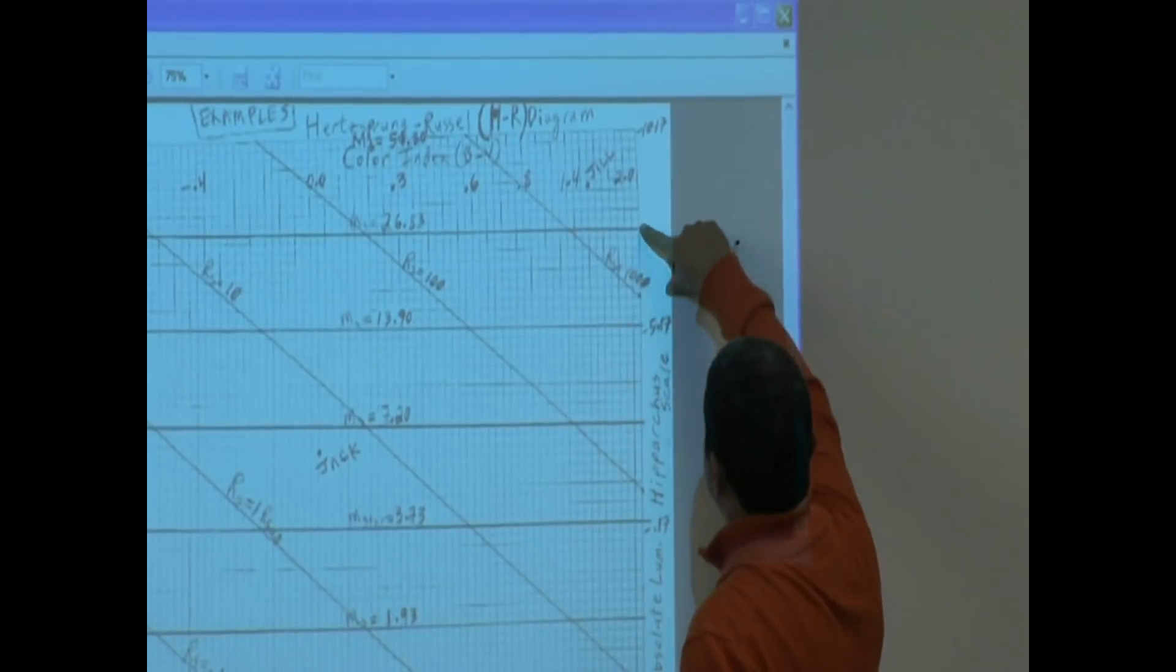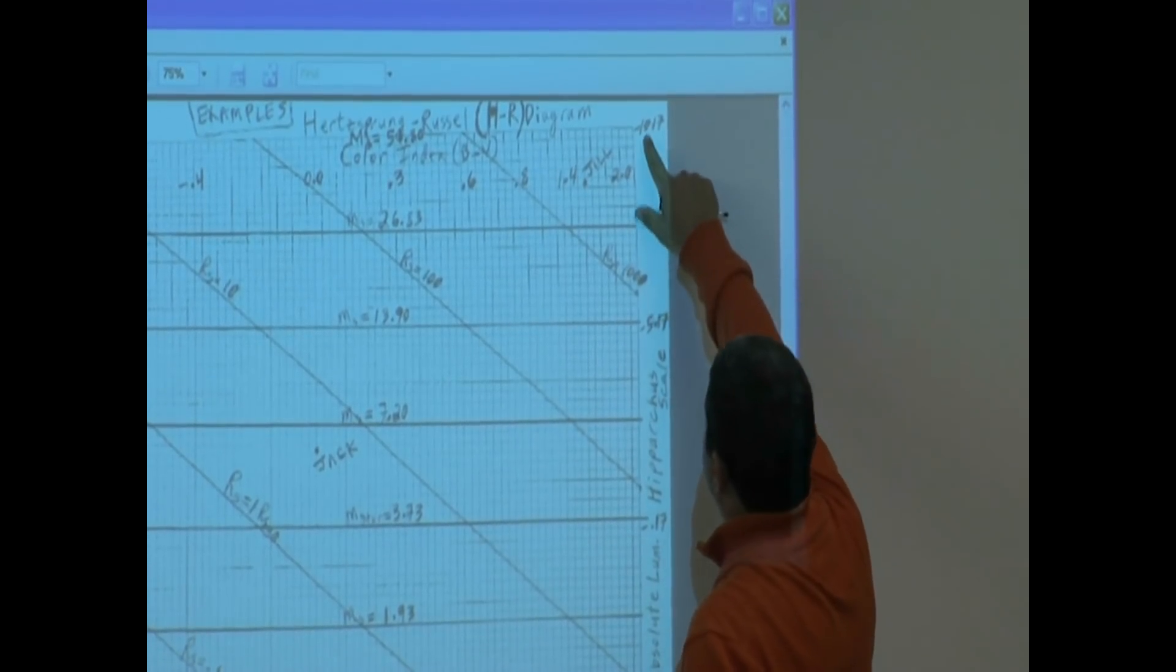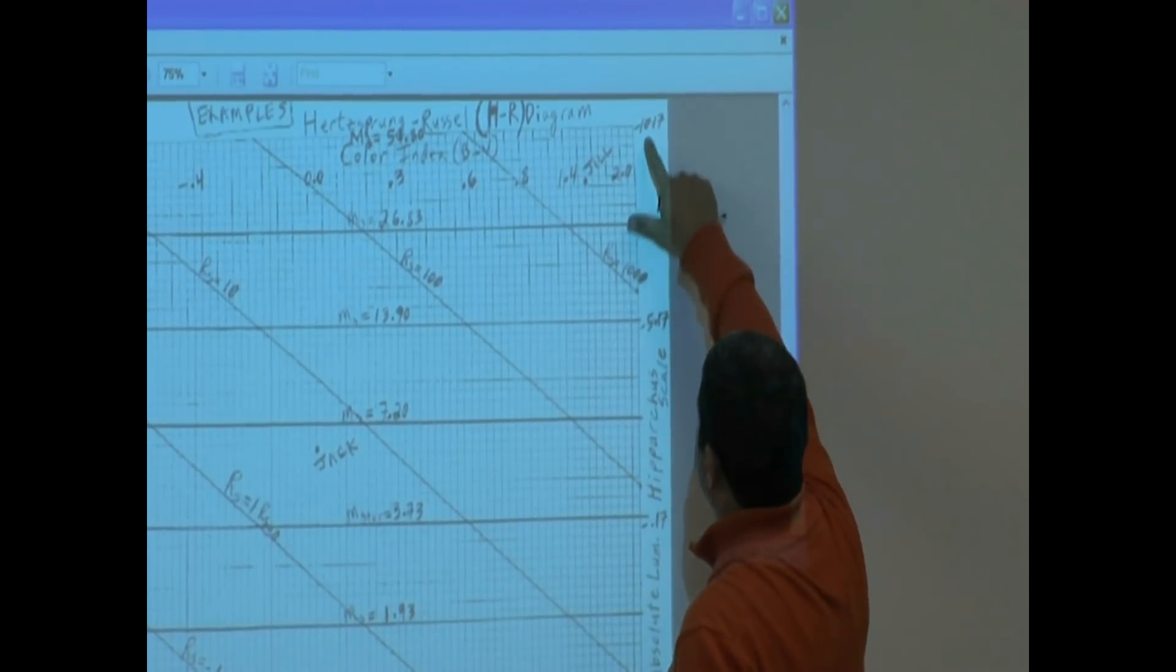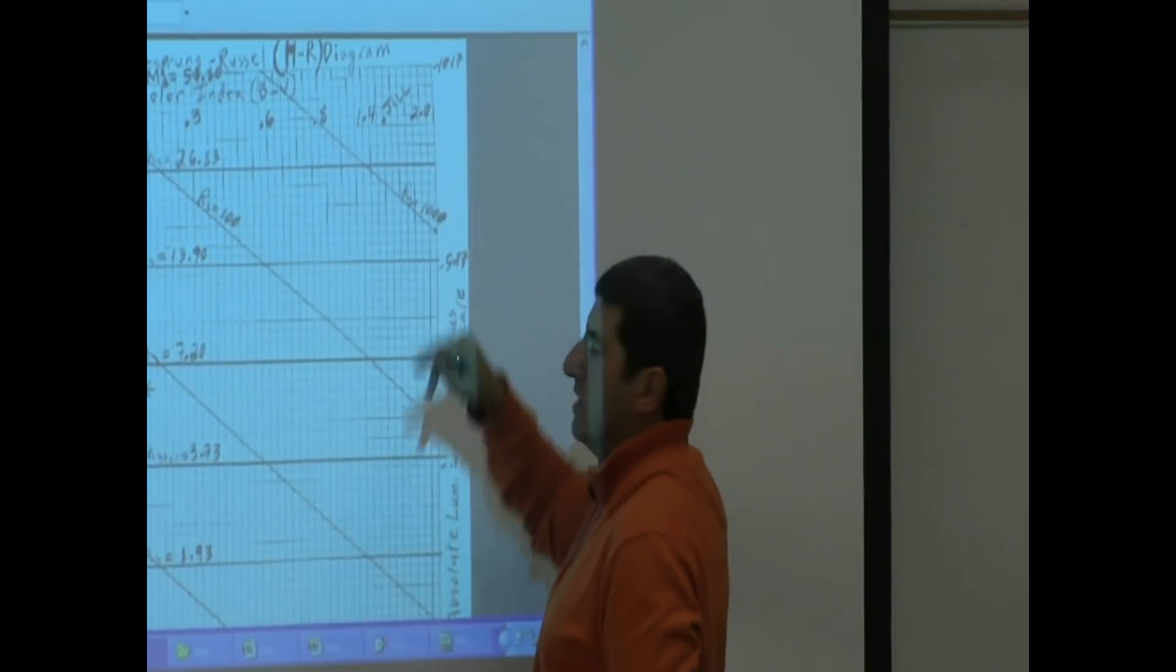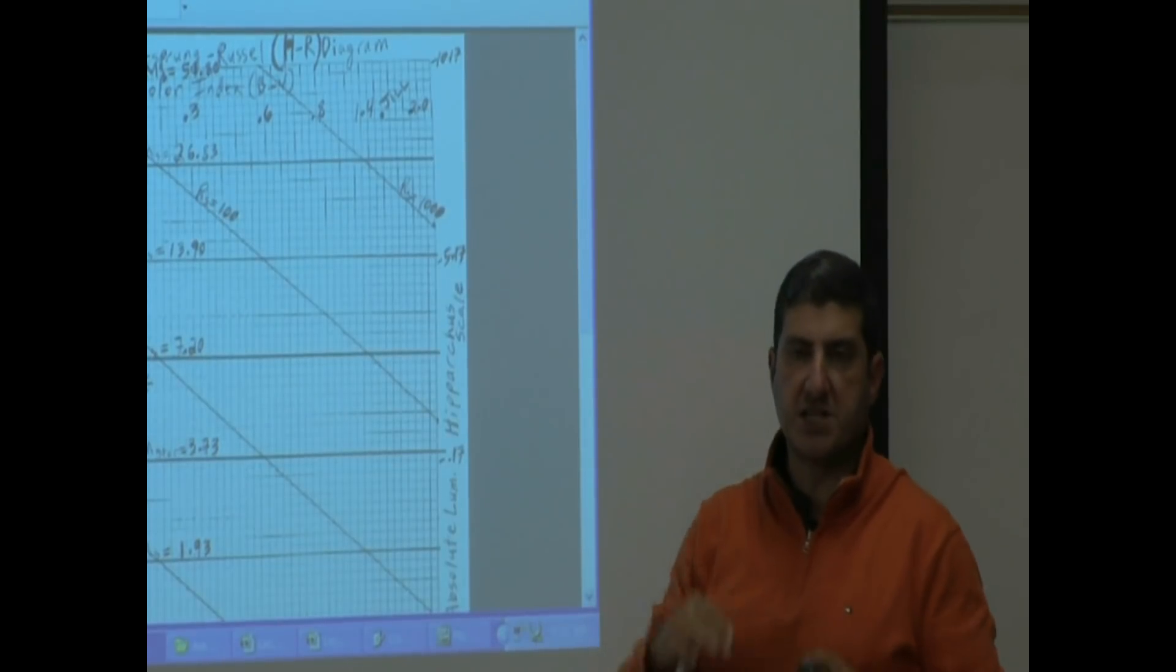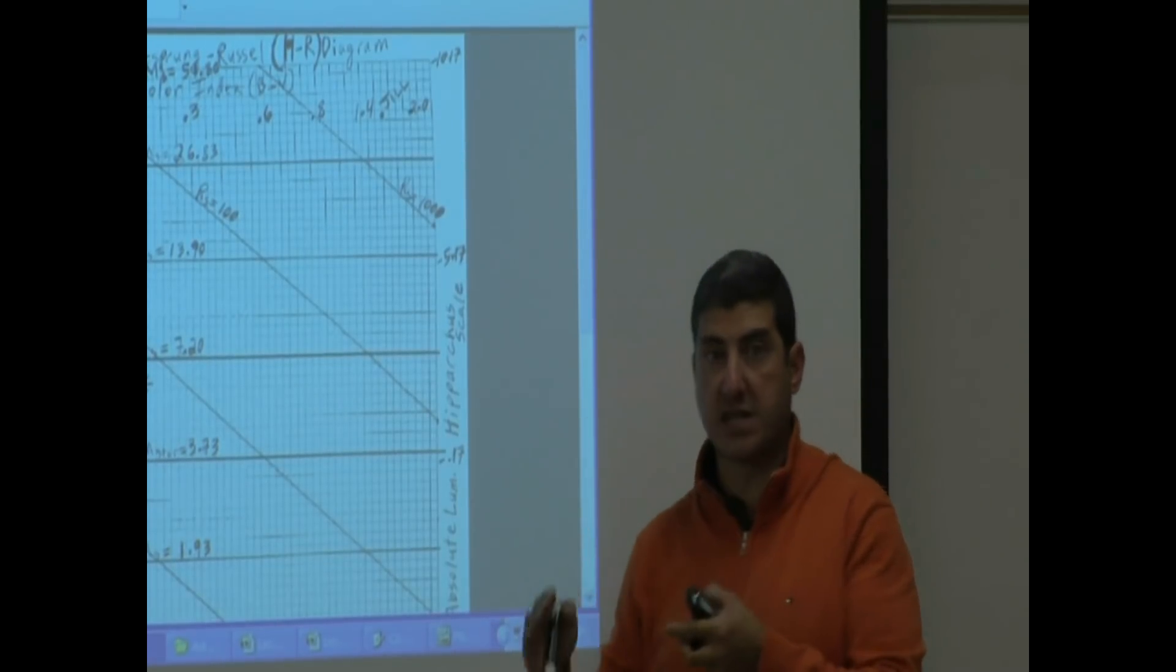What's the Hipparchus scale luminosity? Go to the right. Negative five, negative ten. What's in between negative five and negative ten? Somewhere like negative seven, negative eight.